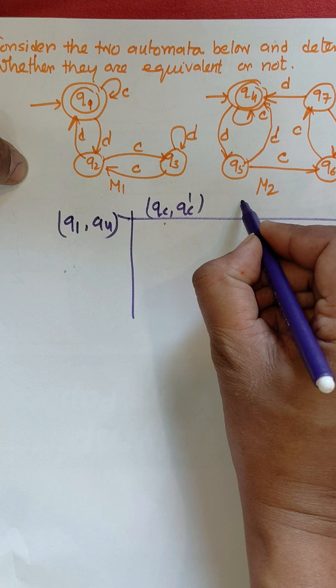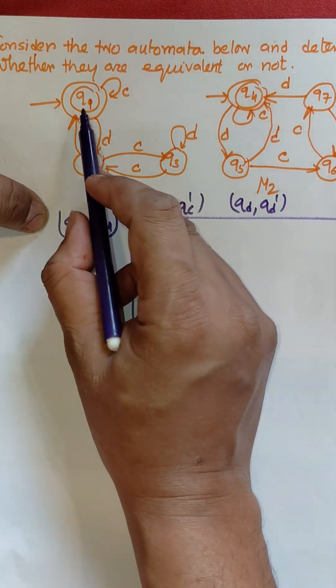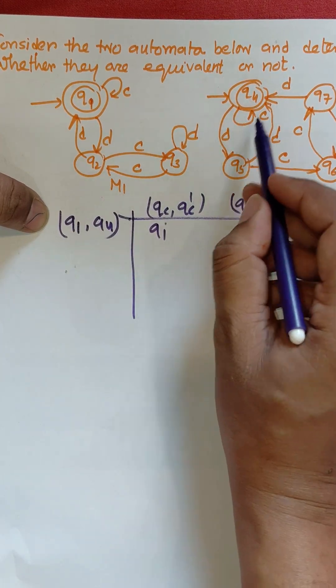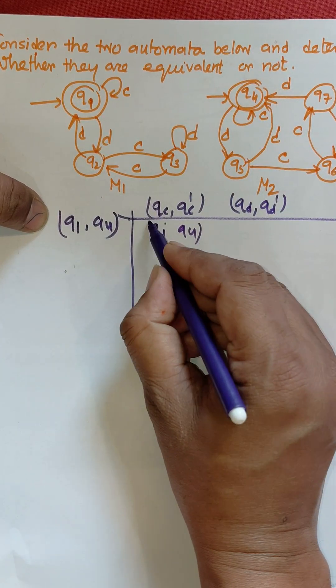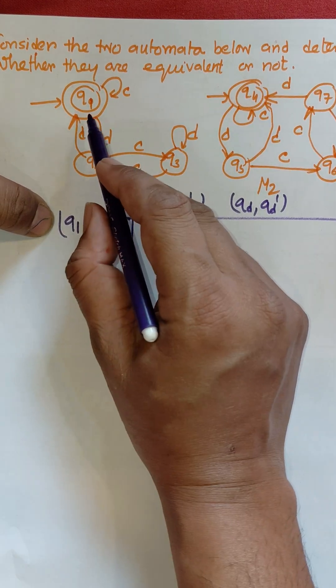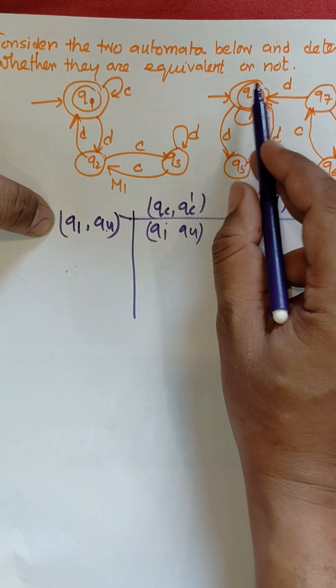Now for q1 to c, output is q1. For q4 to c, output is q4. These both are final states. For q1 to d, output is q2. For q4 to d, output is q5. Both are non-final states.